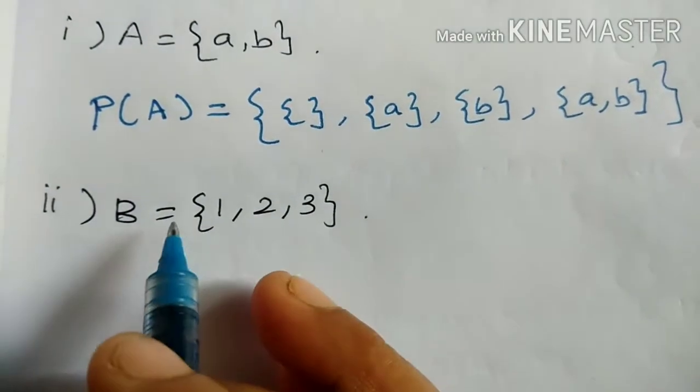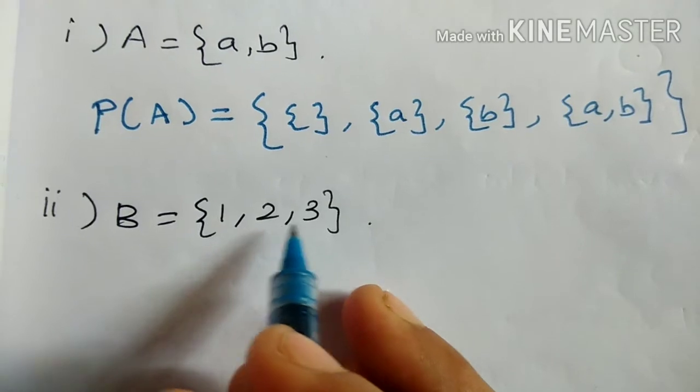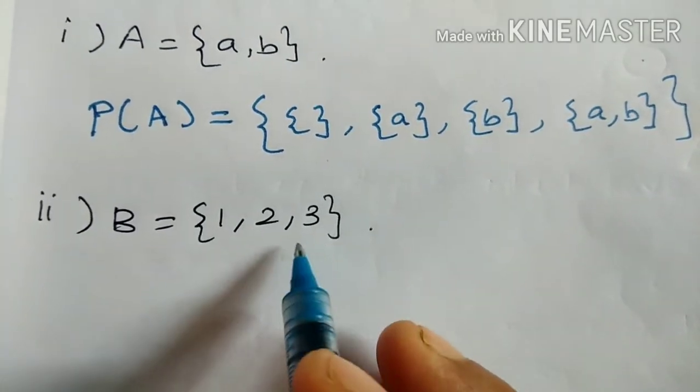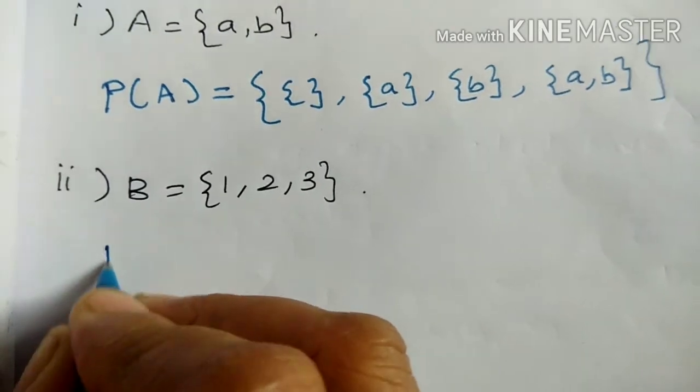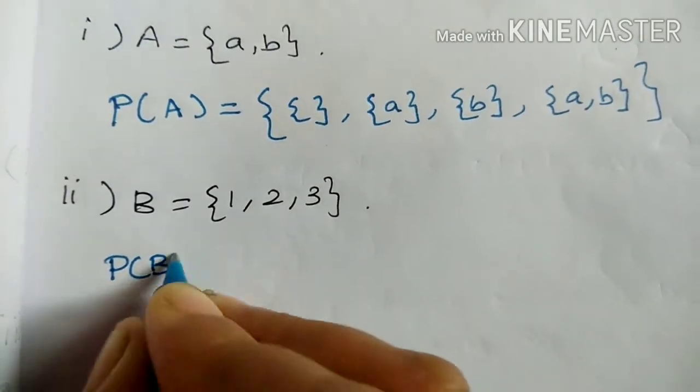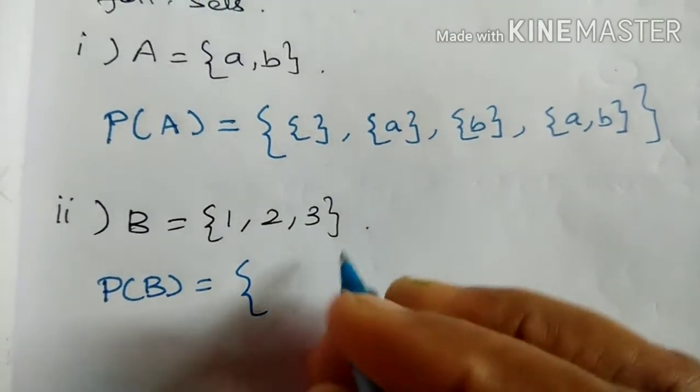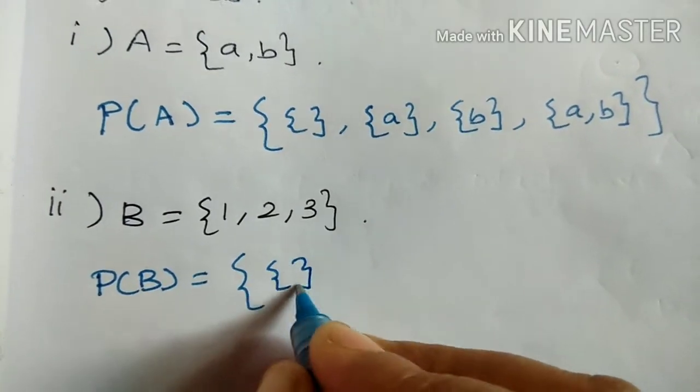Second question, B equal to {1, 2, 3}. This is B. P of B equal to set bracket. First, null set.